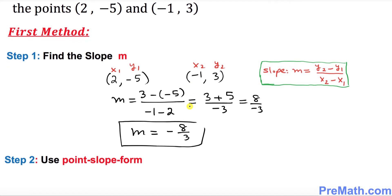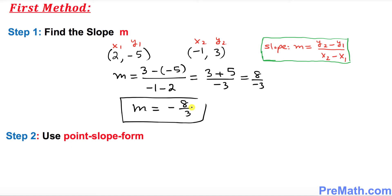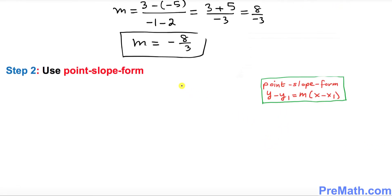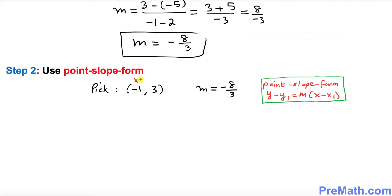Step number 2 is to use point-slope form. Here is the point-slope form formula. Before we get started, you have to choose one of the two given points. I'm going to pick the easiest point — negative 1 comma 3. You can pick either one. We already have slope negative 8 over 3. Call whichever point you picked x1 and y1.